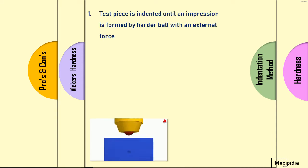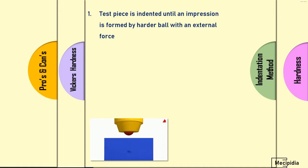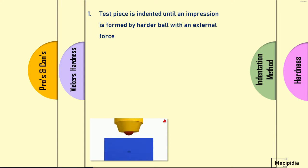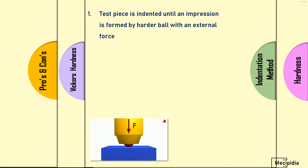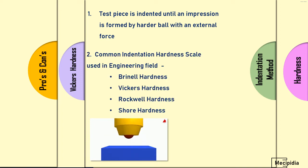In the indentation test method, the test piece is indented until an impression is formed by a harder ball with external force. You can see the image below where the indenter with external force is loaded on the test piece, creating an impression called indentation. That indentation diameter is measured and further converted into hardness on various scales. There are four different hardness scales used in the field.